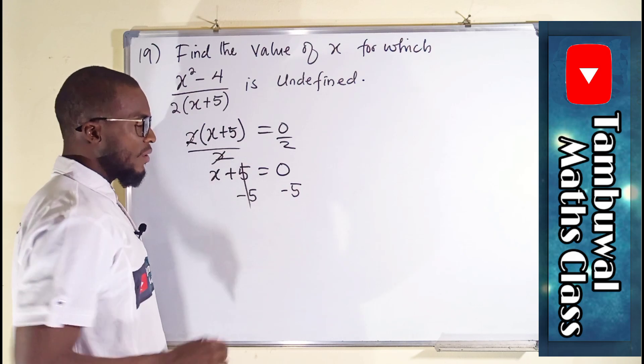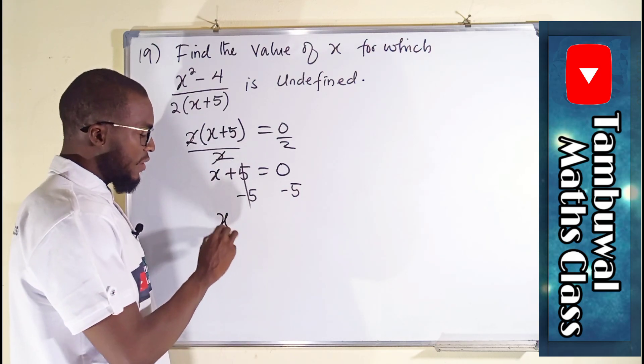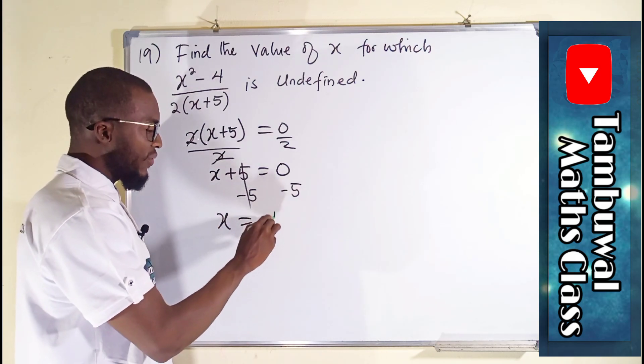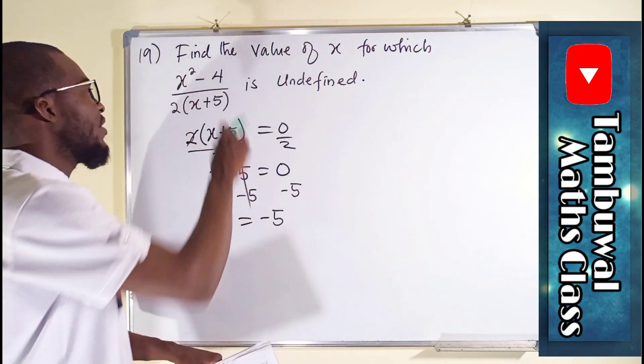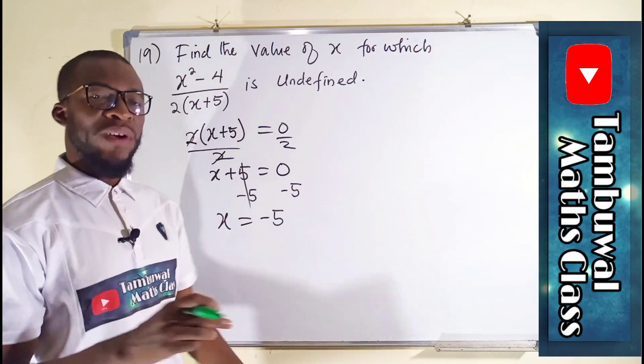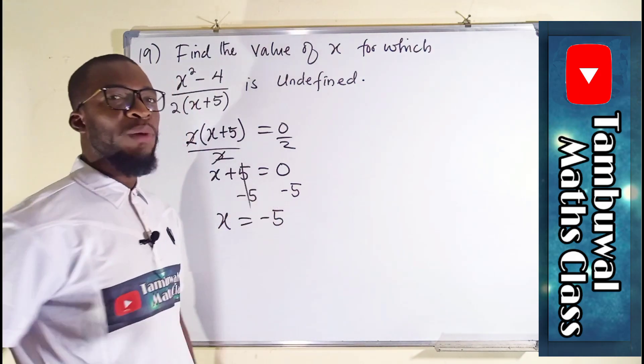5 minus 5 is 0. And you can see that 0 minus 5 is minus 5. So the value of x for which this expression is said to be undefined is equal to minus 5.